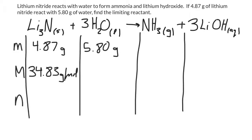I can also find the molar mass of water. There are two hydrogens and one oxygen. Just remember, for the molar mass you do not include the coefficient in front, because molar mass is the mass per mole, not per three moles — just for one mole. So with two hydrogens and one oxygen, that gives us a molar mass of 18.02 grams per mole.